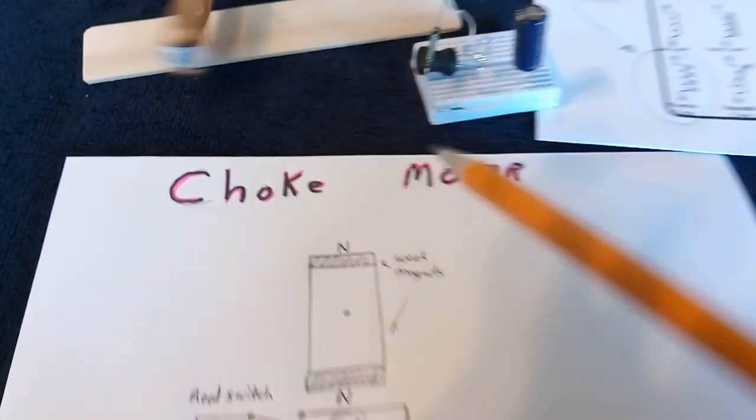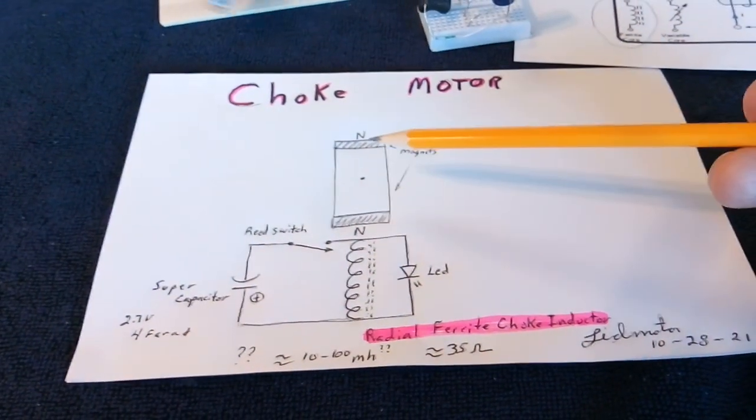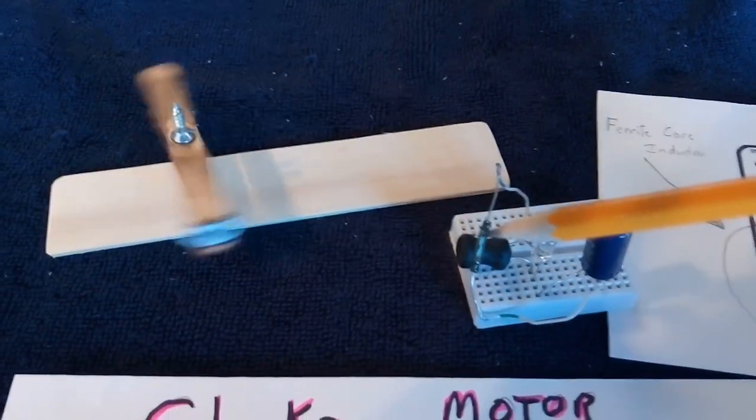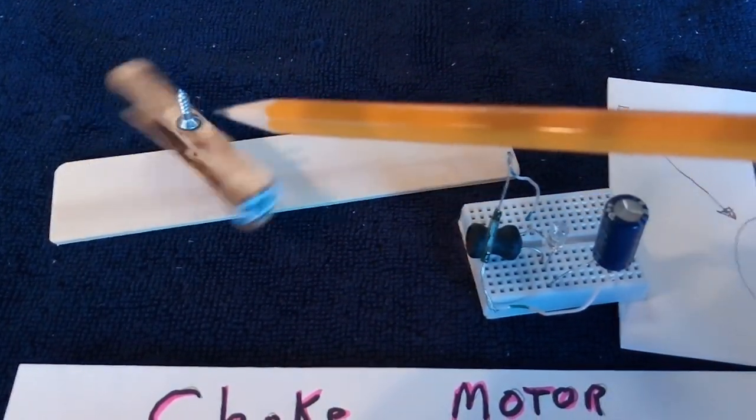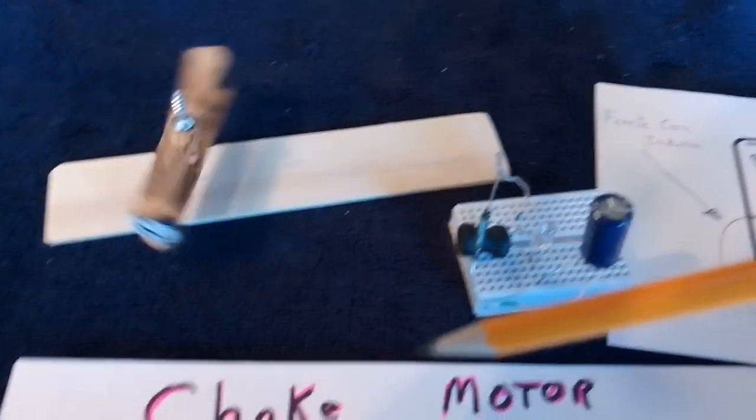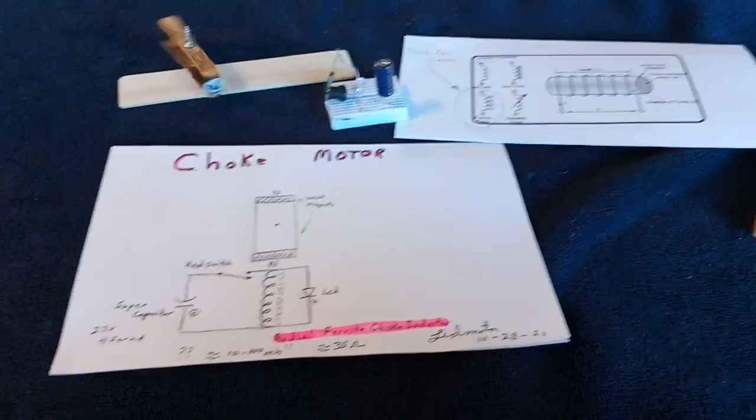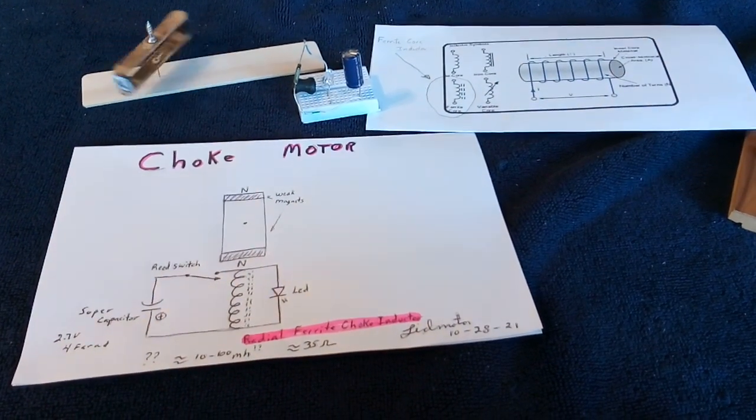And I've ordered a bunch of these things to try out different ones in different configurations. I'm just calling this the choke motor. I've done this before but I did it with strong magnets, and because the attraction was so strong I didn't really like the results. But with these weak magnets in a low friction rotor it's pretty impressive. So anyway, that's what I've been up to. I'm working on this thing I'm calling the choke motor. Thanks for watching.